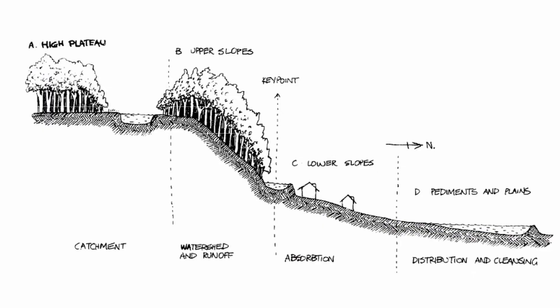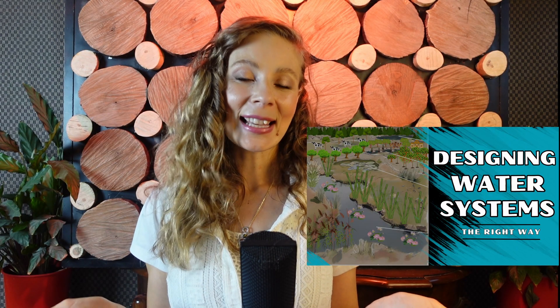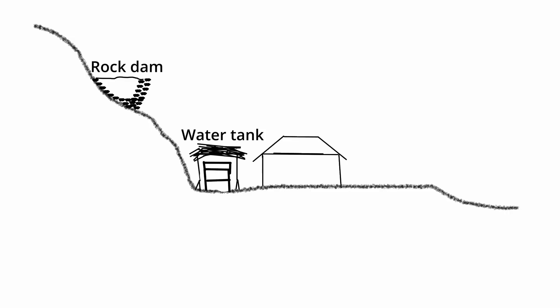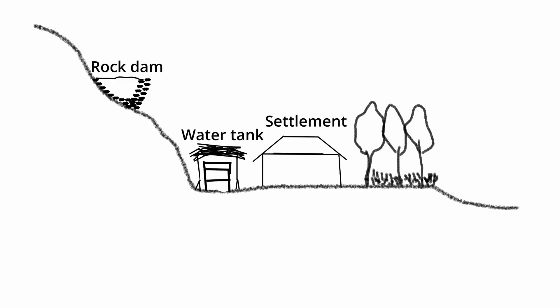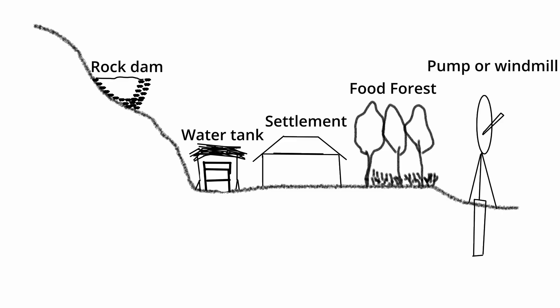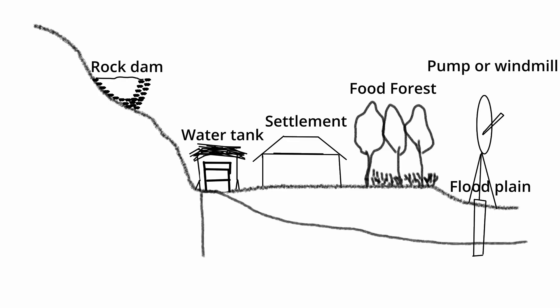Just as we can have an idealized humid landscape design profile, we can have the same for arid landscape. Ideally, we catch rainwater runoff from a cliff or rocky dome and divert it to the desert floor below. The settlement should be above the floodplain, and we can have interesting features like a rock dam above the frost discharging water to either a water tank, swales, or ponds.